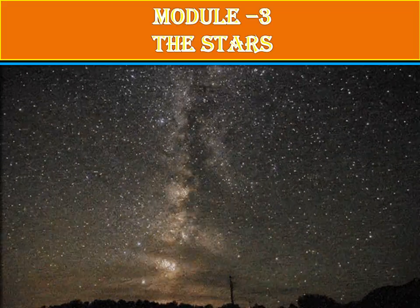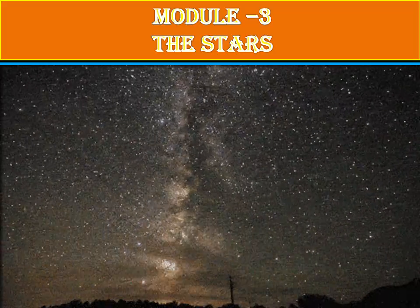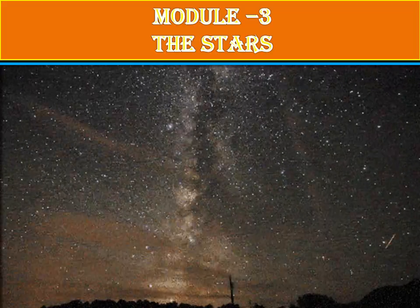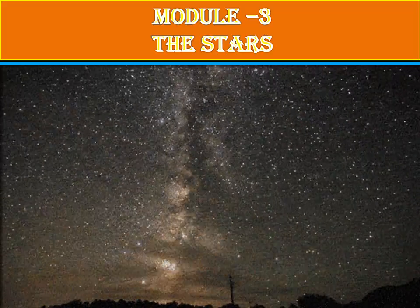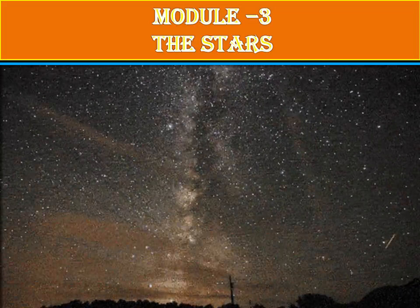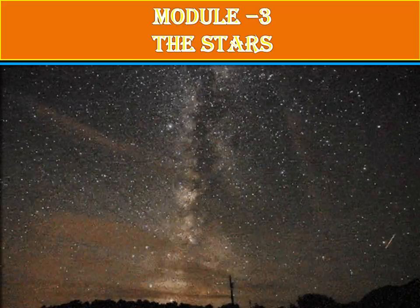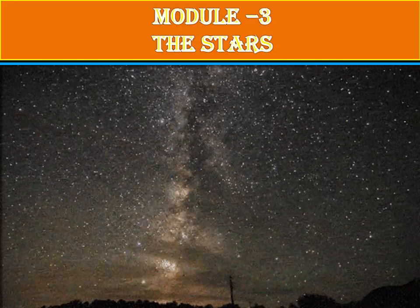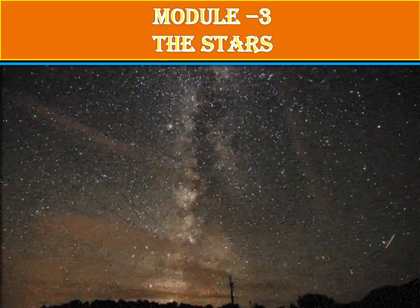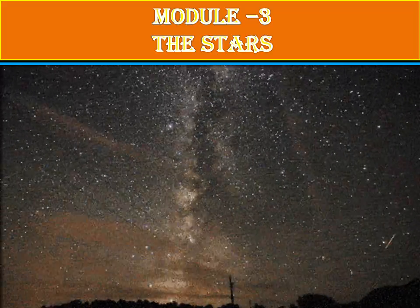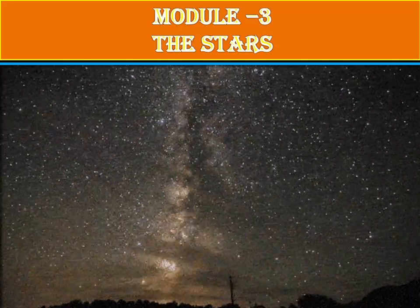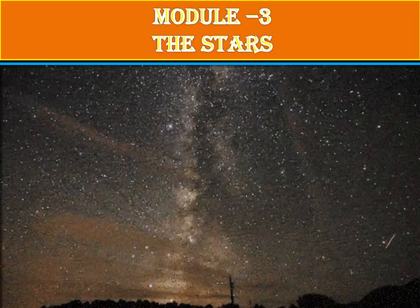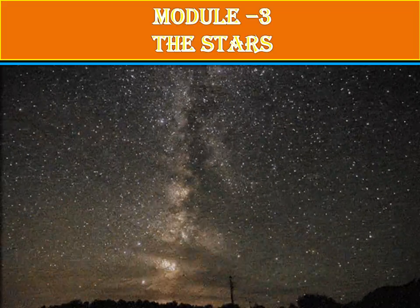Stars are huge celestial bodies made mostly of hydrogen and helium that produce light and heat from the chemical reactions taking place inside their cores. They are building blocks of galaxies, and there are billions of galaxies existing in the universe. It is impossible to know how many stars exist, but astronomers estimate that in our Milky Way galaxy alone, there are about 300 billion stars.